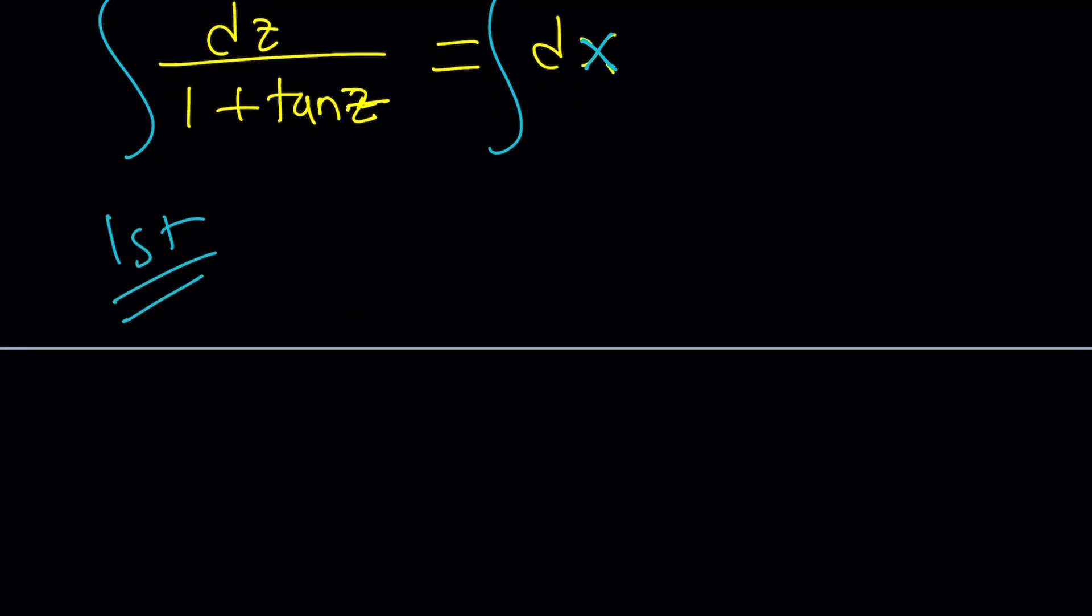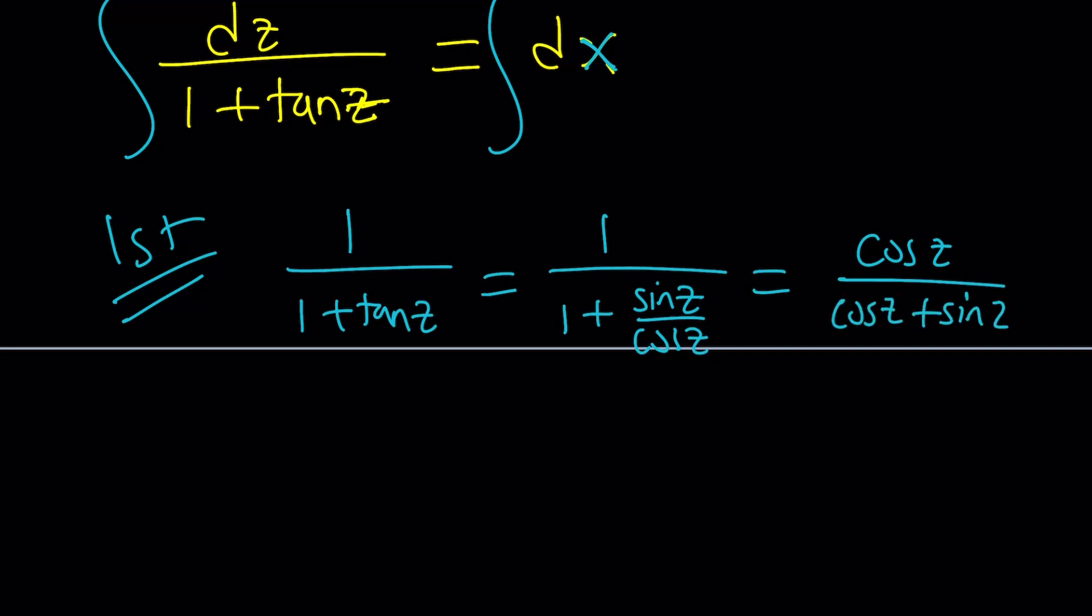We have 1 over 1 plus tangent z. I'm going to write it as 1 over 1 plus sine z over cosine z. And that can turn into cosine z over cosine z plus sine z. This is not something we're going to use with the first method, but I just want to write it, put it aside, and then we'll use it later.